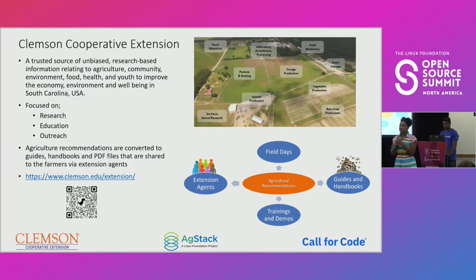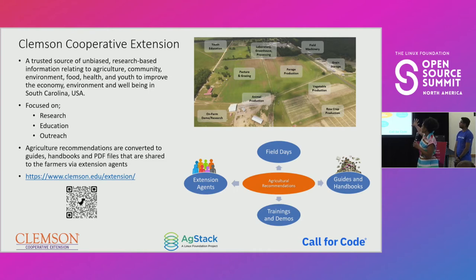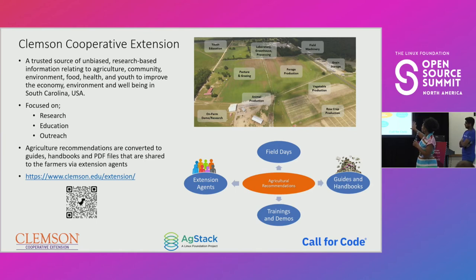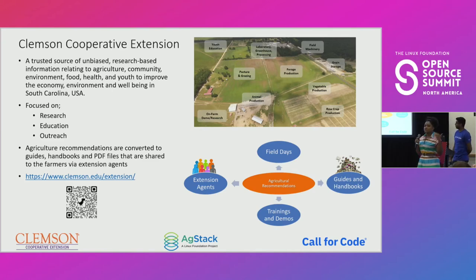We've got extension services around the world — what if we bring them together? Every extension service has different information they can contribute. Even if you're not part of an extension service but you're a researcher with data, what if we create a framework where anyone can provide that data and make it available to farmers across the world? Clemson is the first partner we've been working with, so we use them as a model. The Edisto Research Center has farm animals, crop production fields, on-farm demos, research, and youth education — all focused on research, education, and outreach.